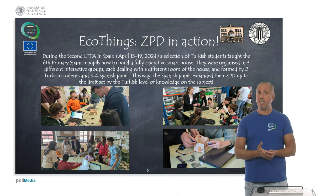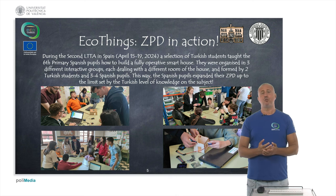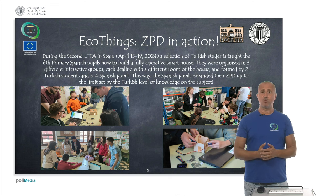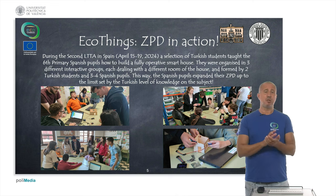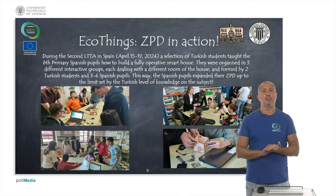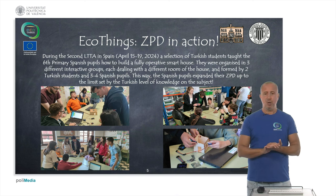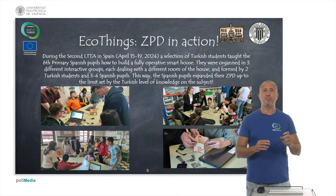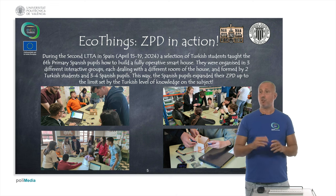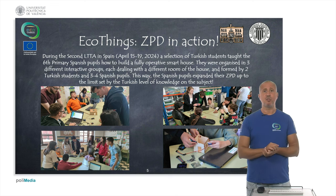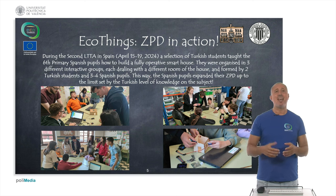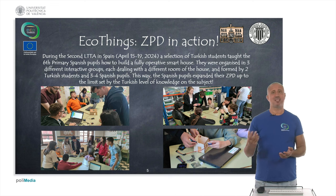The only possible way to communicate was English. Though Turkish students had a good level of English, the Spanish primary students, because of their age and socio-economic background, have very low English knowledge. So we had to use prints, schemes, the projector to show things, and translators eventually. We managed to overcome those difficulties, also thanks to the help of supervising adults and the effort of both the Spanish pupils and the Turkish students.